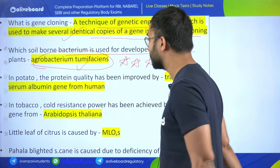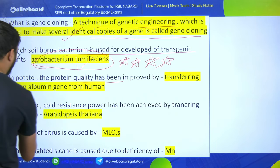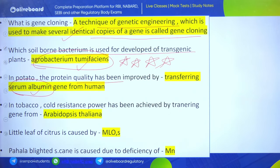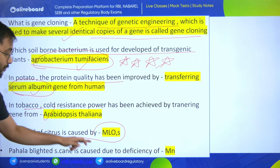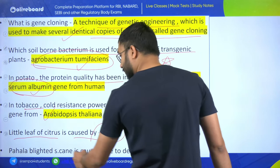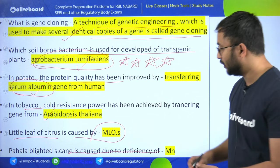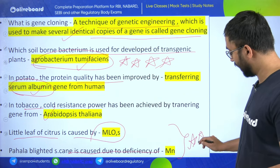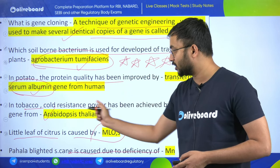In potato, the protein quality has been improved by transferring the serum albumin gene from humans - very important observable knowledge. In tobacco, cold resistance power has been achieved by transferring a transgenic gene from Arabidopsis thaliana. Little leaf of citrus is caused by MLO, and Pahala blight of sugarcane is caused by deficiency of manganese.